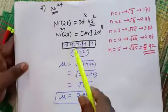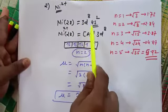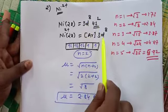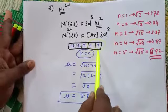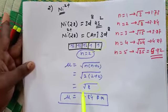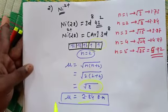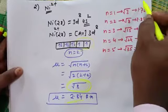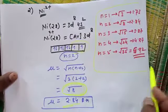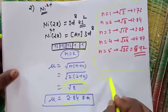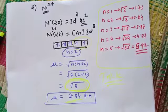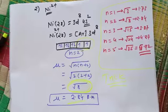Second example I took is nickel 2 plus. We saw this in last lecture also. 3d⁸ 4s². We have 3d⁸. I have 2 unpaired electrons. So square root of 8 value comes, that is 2.84. So this simple trick you have to remember. Always don't forget this trick. If you remember this, your 4 marks in NEET are fixed.